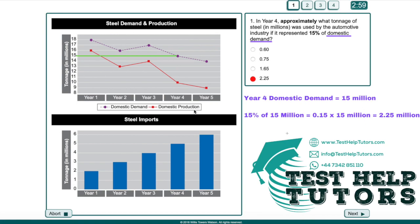To do this, all we have to do is work out 15% of 15 million, which is the same as 0.15 times 15 million. Because remember, working out 15% of something is the same as multiplying it by 0.15. So 0.15 times 15 million will give us 2.25 million. So our answer is this last option here.